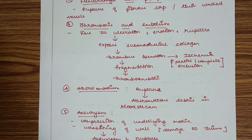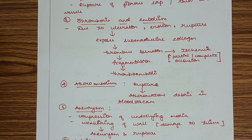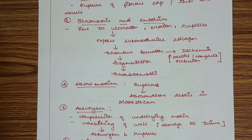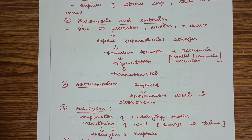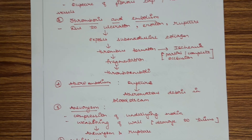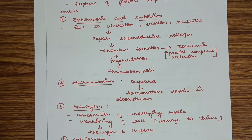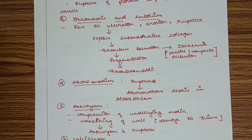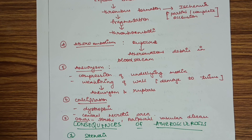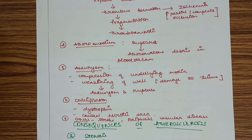There will also be thrombosis and embolism. When ulceration, erosion, or rupture occurs, it exposes the subendothelial collagen, leading to platelet attraction, adhesion, and migration, forming a thrombus. The thrombus increases in size progressively, which can cause ischemia due to partial or complete obstruction. Or the thrombus can fragment and deposit in other organs such as the brain (causing stroke) or heart (causing MI), forming a thromboembolism.